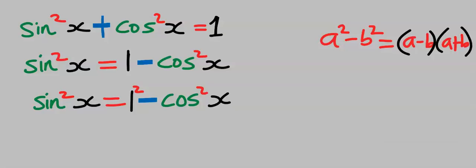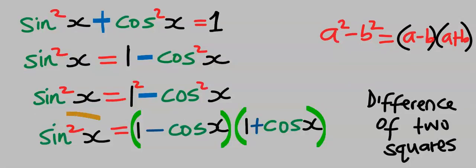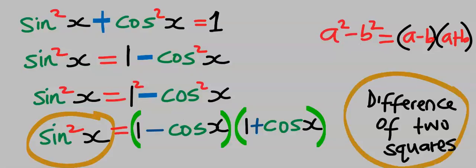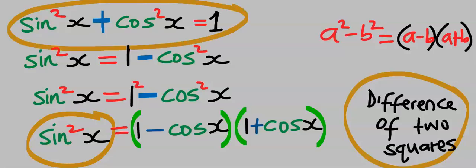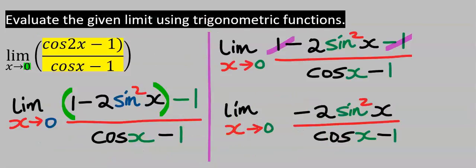Hence, I can replace this with this. We have just represented sine squared x using difference of two squares from this basic formula. Hence, wherever we see sine squared x, we are going to replace it with this. In the limit function, we are going to replace sine squared x.